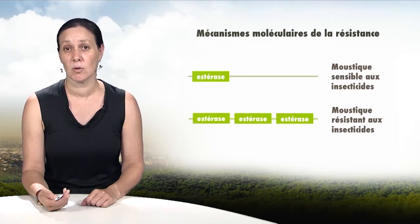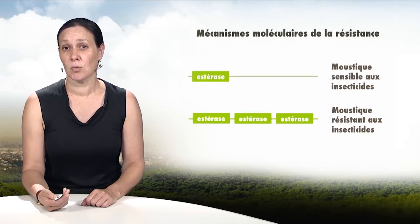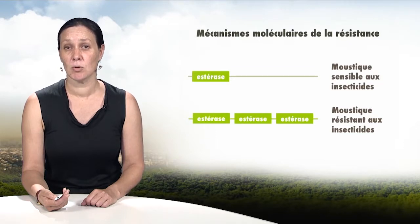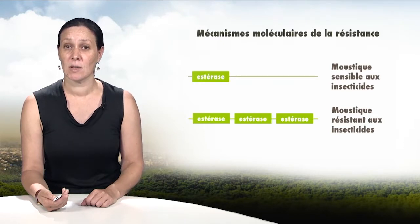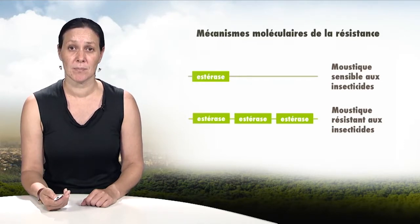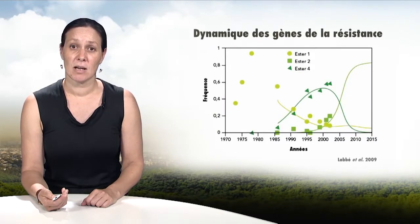One mechanism of resistance is the overproduction of detoxifying enzymes known as esterases. This overproduction can be linked to the multiplication and increased number of copies of the esterase gene in the mosquito's genome. Dozens of such examples are known in the world.